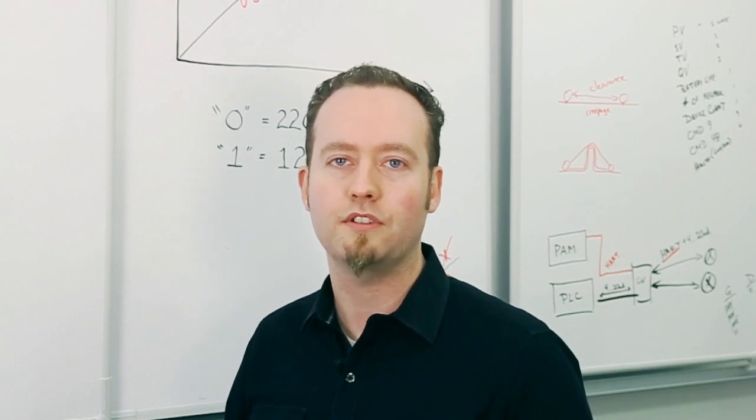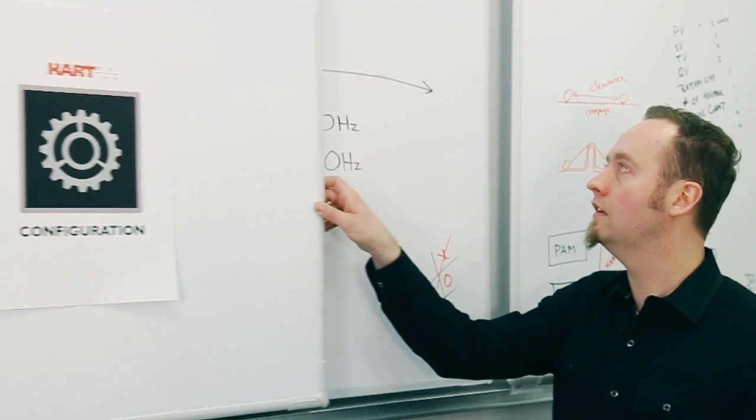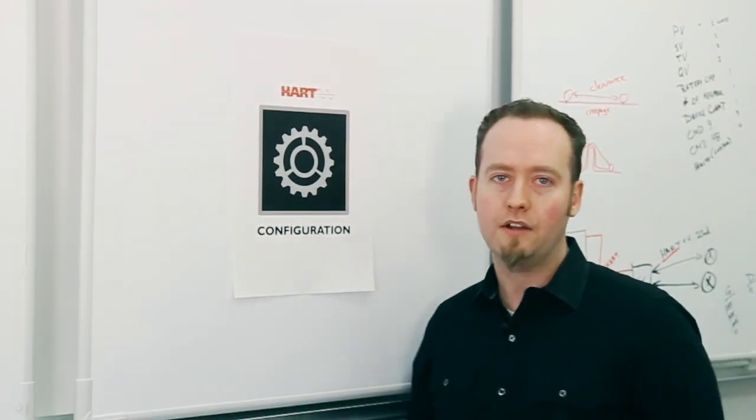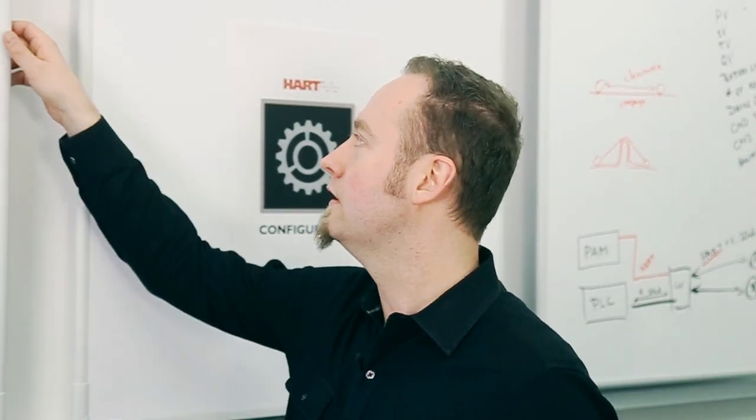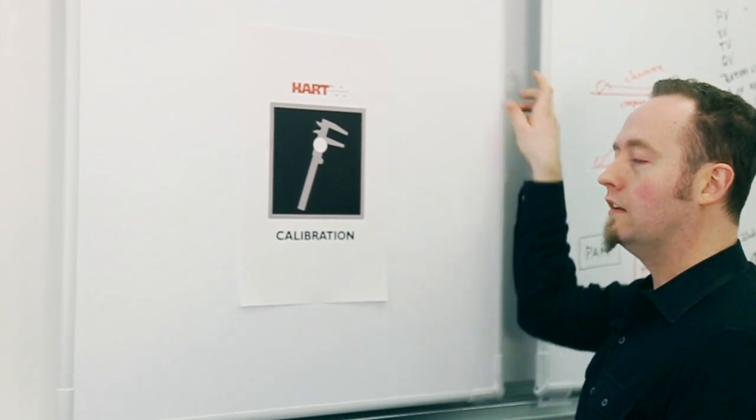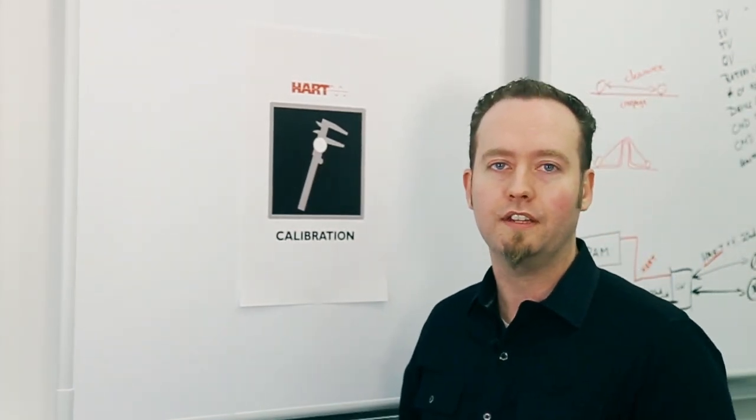The most basic use of HART allows you to configure your devices. Name your device with a device tag for easy identification. The measurement range, engineering units, and sensor type can also be selected. After the initial installation and configuration, the device can be calibrated to set the zero and span, trim the 4 to 20 milliamp signal, or account for other external sources of measurement error.